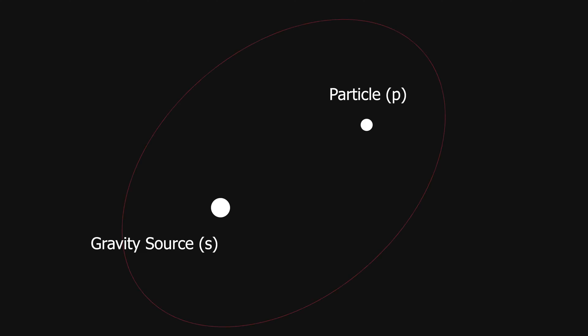The first thing to consider is that we're going to have somewhere in space our planet, which we'll call S for source, and we're going to have some particle somewhere, which we'll call P. We don't care where the source or particle is relative to other things in the world — we just care about their position relative to each other. So what we want to figure out is the distance between the two.